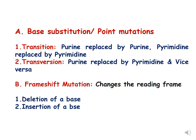Another term is base substitution, also called substitution mutation. Substitution mutations are also called point mutations and are of two kinds: transition and transversion.